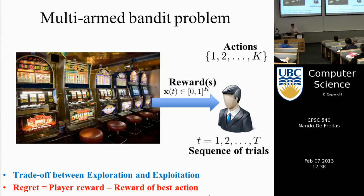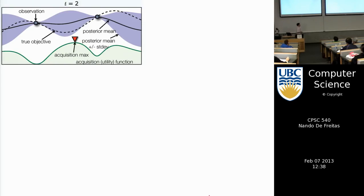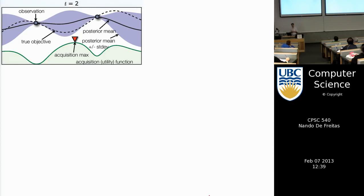We always measure our wealth against the wealth of our peers. We'll solve this using Gaussian processes throughout to deal with the exploration-exploitation trade-off, though other statistical models are possible. For now we assume Gaussian processes are at our disposal, since that's the technique we've learned so far.